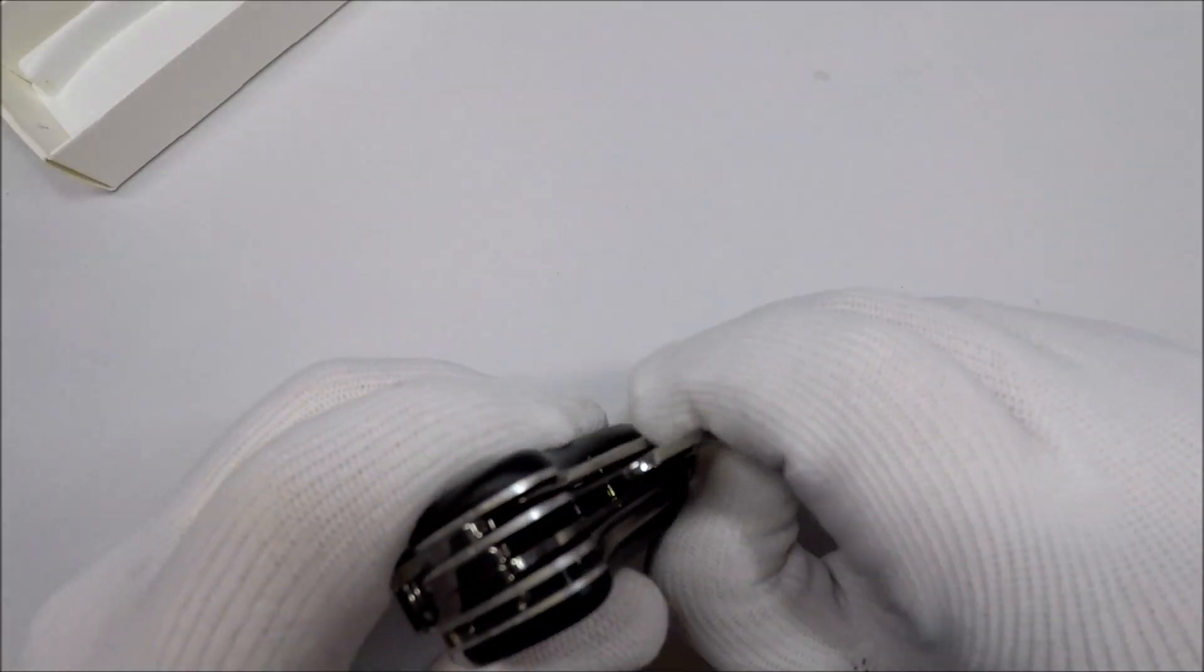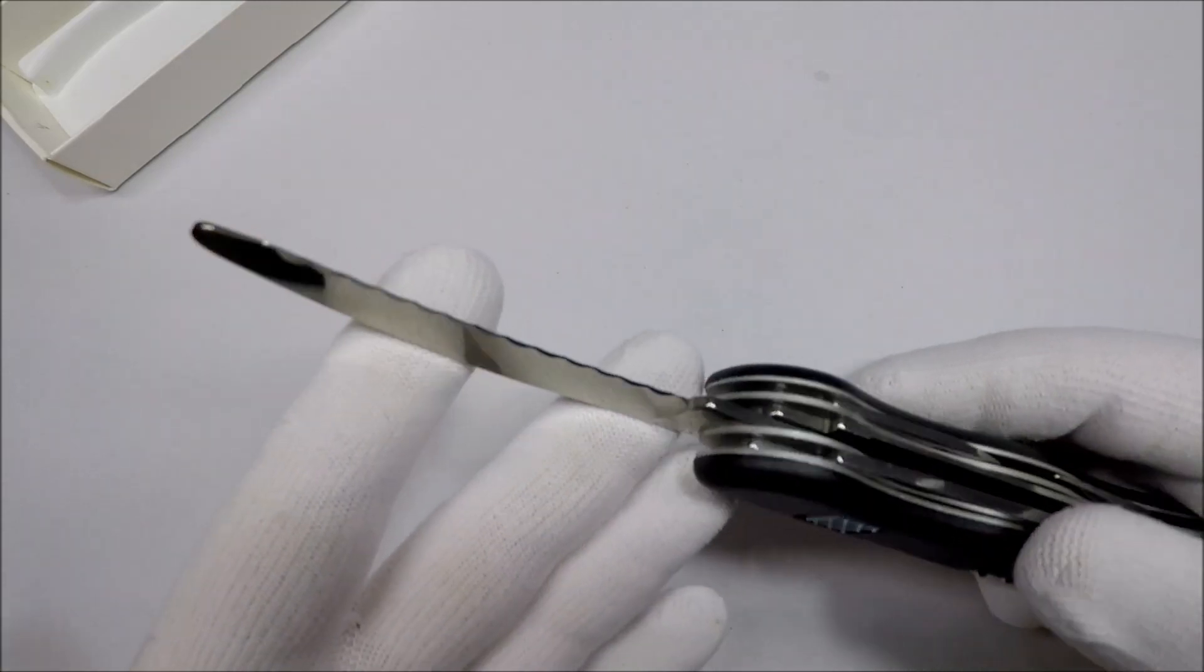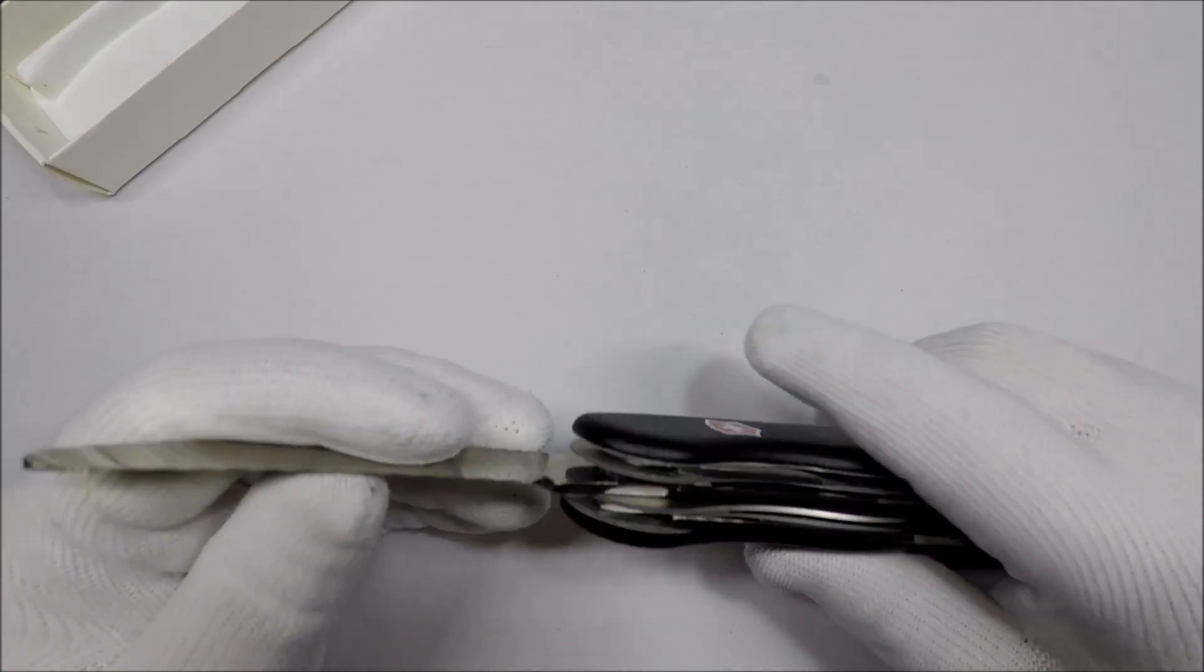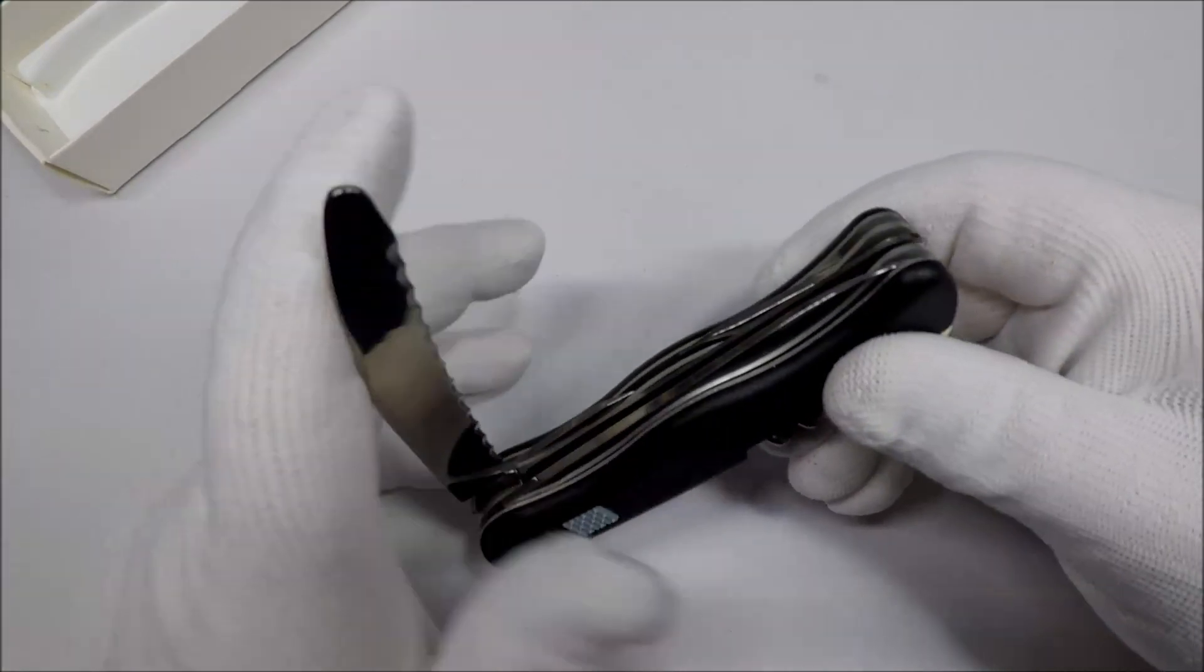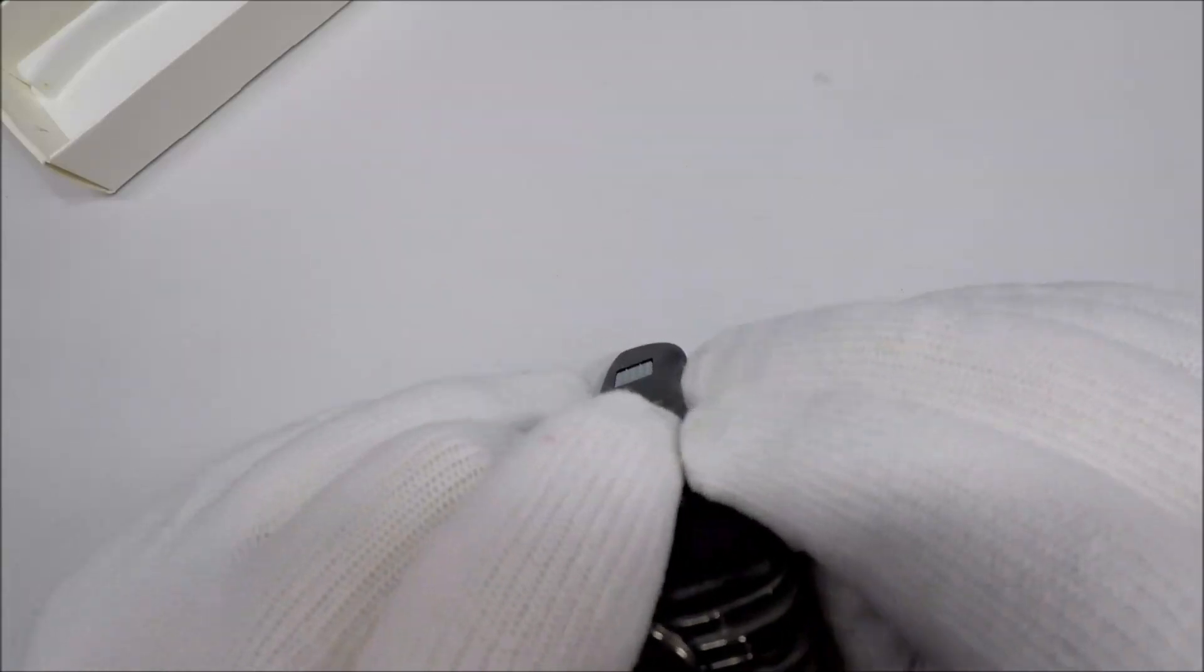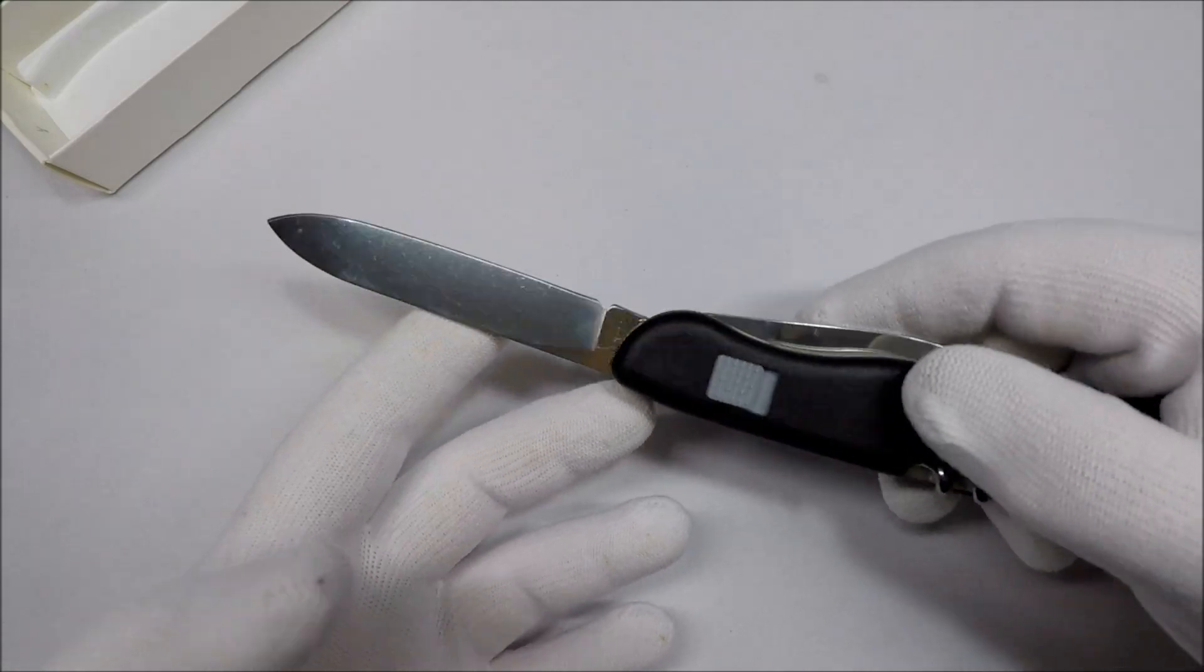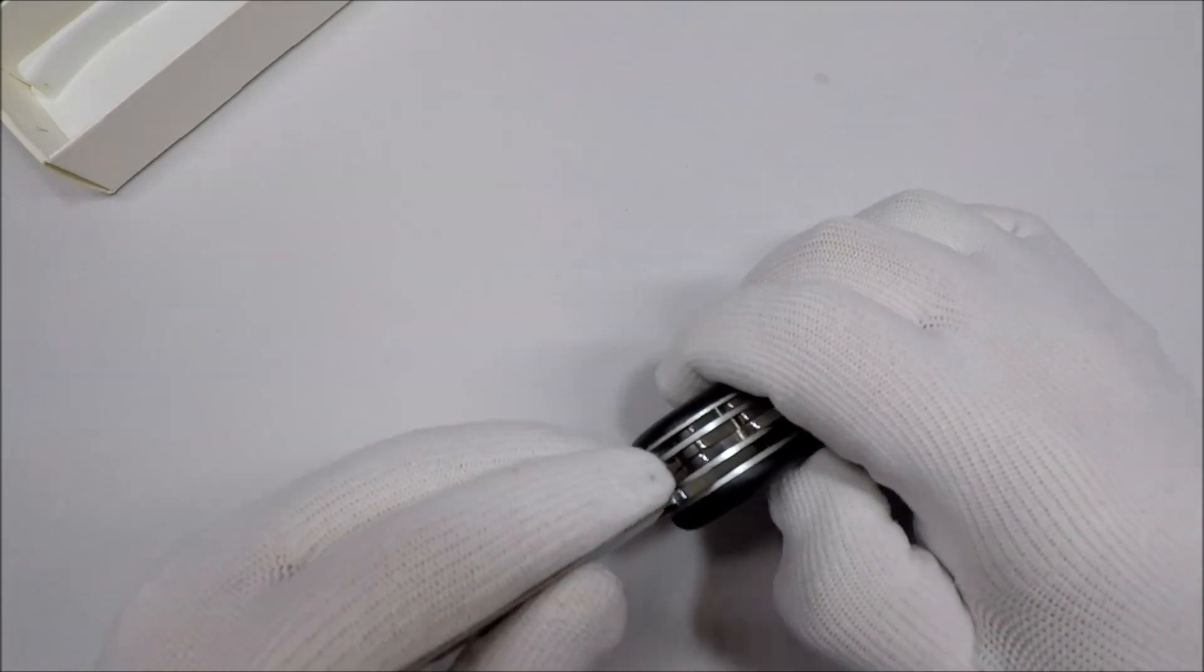Now you've got a curved, serrated blade here, and now this one is not a lock blade. This part does not lock. The main blade, however, the large blade, it does lock. And it has a little scale release here.